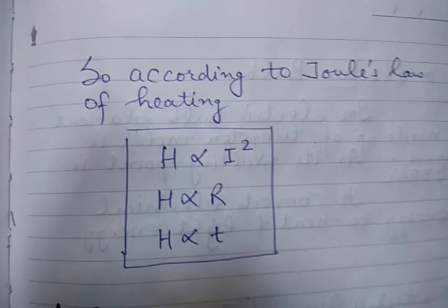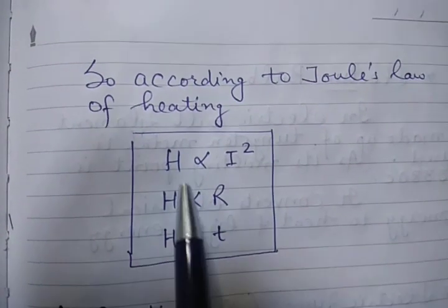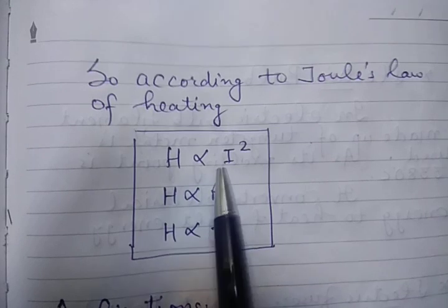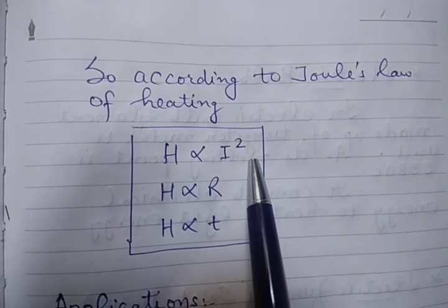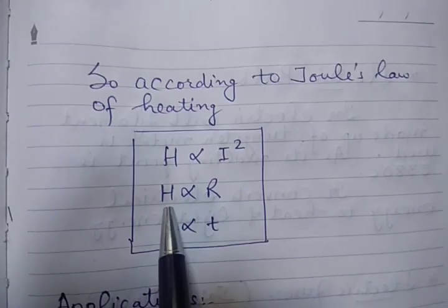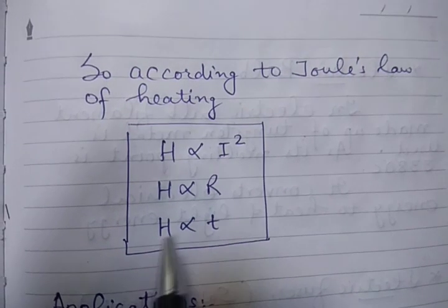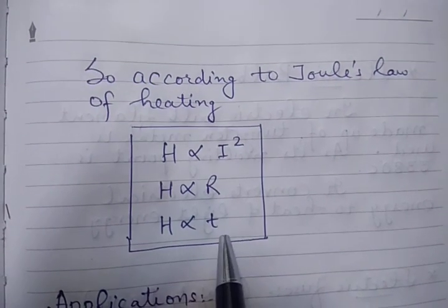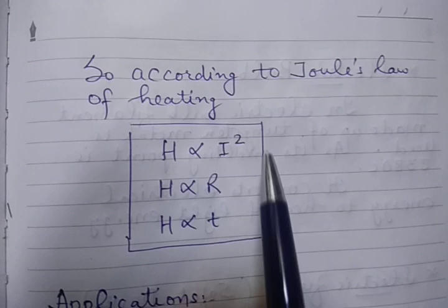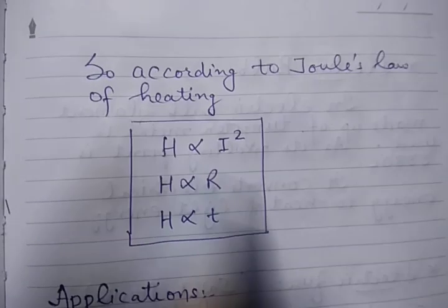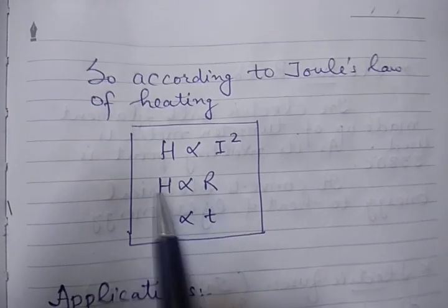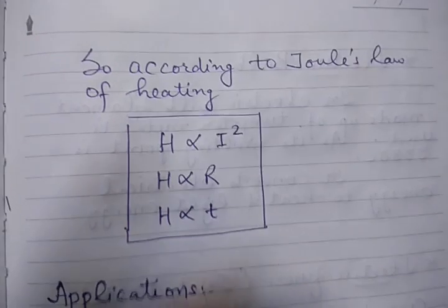So according to Joule's law of heating, heat dissipated is directly proportional to the square of the current, heat dissipated is directly proportional to the resistance, and heat dissipated is directly proportional to the time. So that means if current is more, heat will be more; resistance is more, heat will be more; time is more, heat will be more.